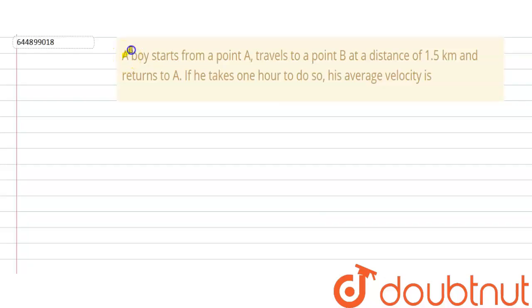So in this question we are given that a boy starts from point A, travels to a point B at a distance of 1.5 km and returns to the point A. If he takes one hour to do so, his average velocity is given by. So let's see, what is given in this question?